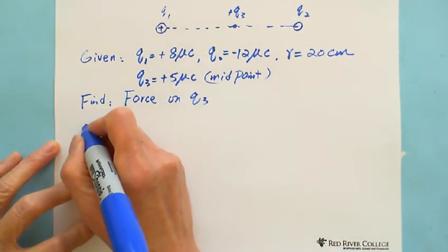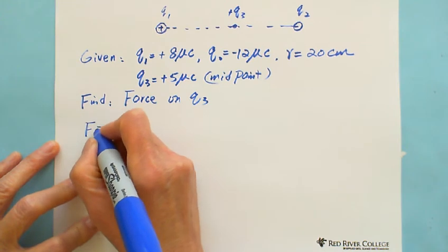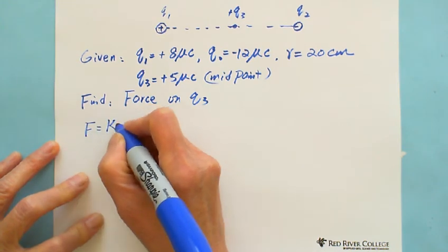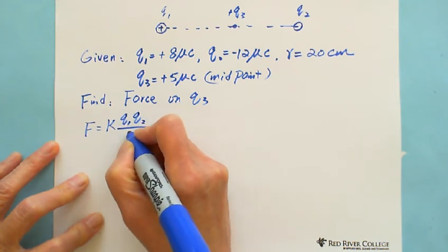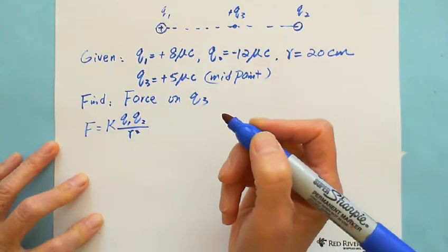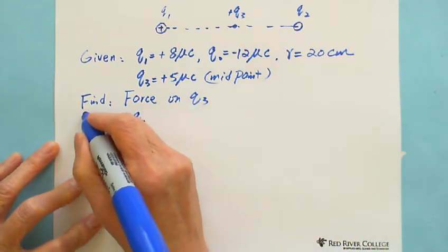Coulomb's Law has F equals K Q1 Q2 over R squared. This is the general formula.